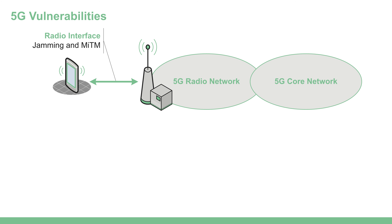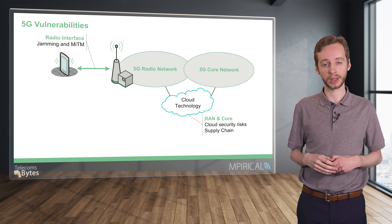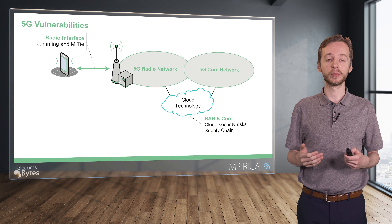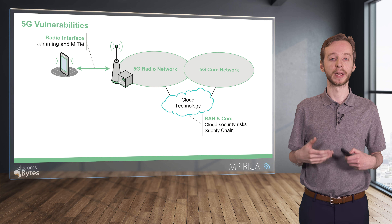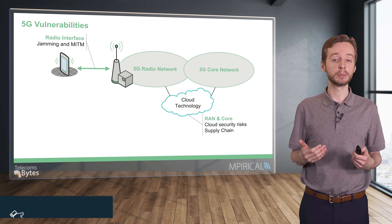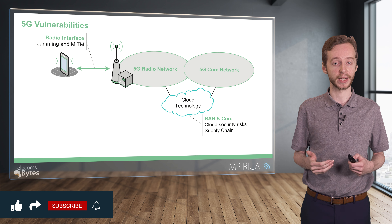Looking deeper into the cellular network, there are vulnerabilities for both the radio network and the core network, as both can implement cloud technology. This means they have inherited vulnerabilities from the cloud. An example of this is the misconfiguration of identity and access management (IAM) systems, which is responsible for 61% of cyber attacks in the cloud.